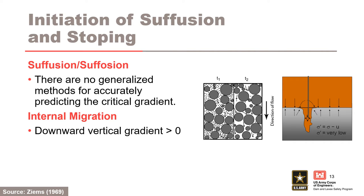For suffusion, in many of the internally unstable soils tested, gradients to initiate erosion are so high that they are unlikely to occur in dams, levees, or their foundations. Laboratory testing is needed with flow horizontal and inclined to better define the gradients at which erosion initiates. For internal migration, a downward gradient is needed to move eroded particles into the open defect. There also needs to be enough seepage gradient in the defect to transport eroded particles to the exit.